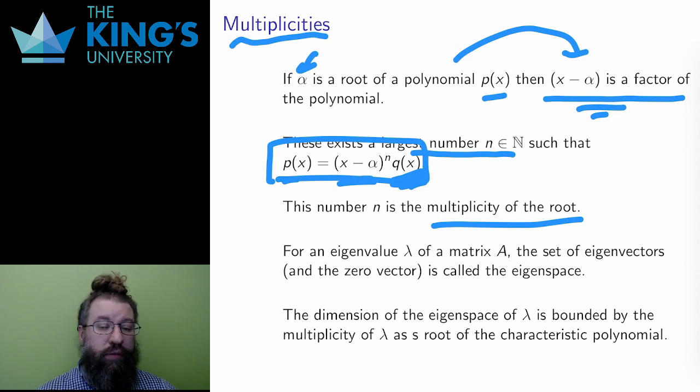To find an eigenvalue, I ended up with a polynomial, the characteristic polynomial, and its roots were the eigenvalues. However, these roots may have multiplicities. So what does that say about the eigenvalues?